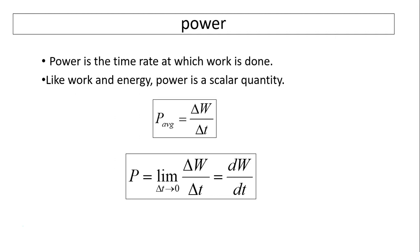Power is the rate at which work is done. That means power equals delta W over delta t. That is the average power. The instantaneous power, you have to do the derivative, dW over dt.